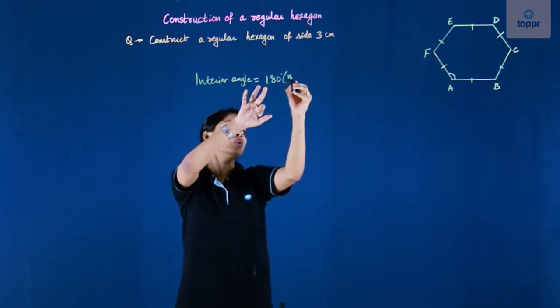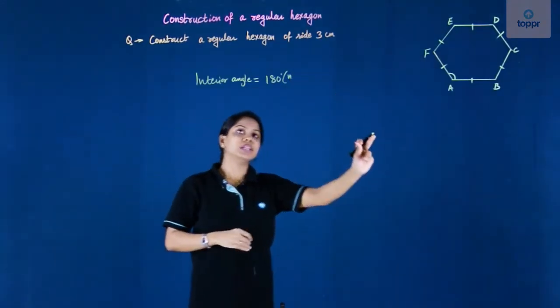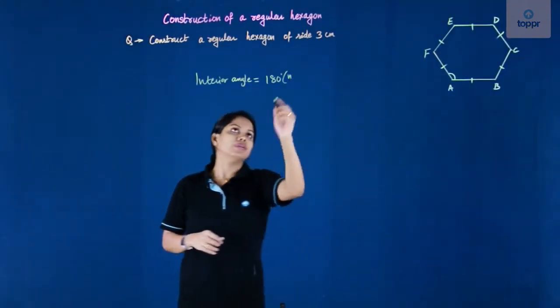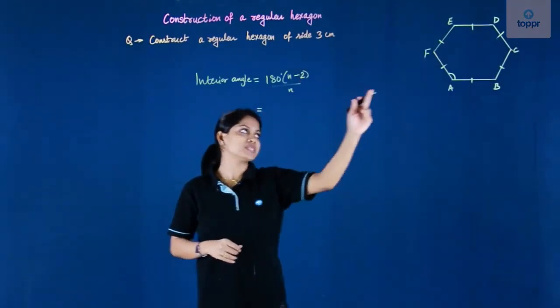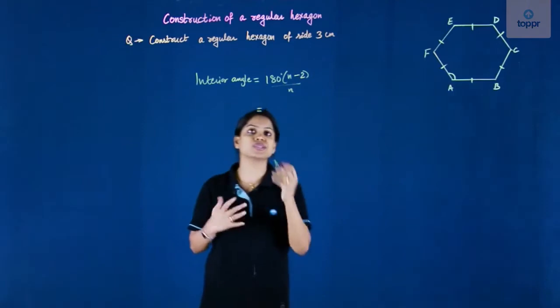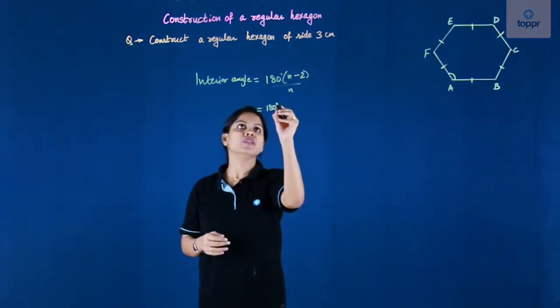It is 180 degree into N, where N is basically the number of sides. So we will be substituting N after this. Now it has six sides, so N for us is 6.